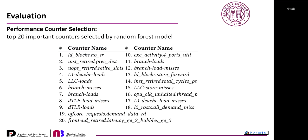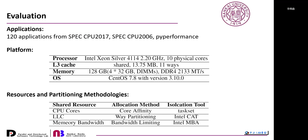We have implemented DRL-Part and evaluated it with extensive experiments. The performance counters used were selected using a random forest model according to their importance. We test 120 applications from SPEC CPU 2017, SPEC CPU 2006, and a NPY performance benchmark suite. The platform is an Intel server, and we consider three resources: CPU cores, last-level cache, and memory bandwidth. We use taskset, CAT, and MBA to implement the resource partition.